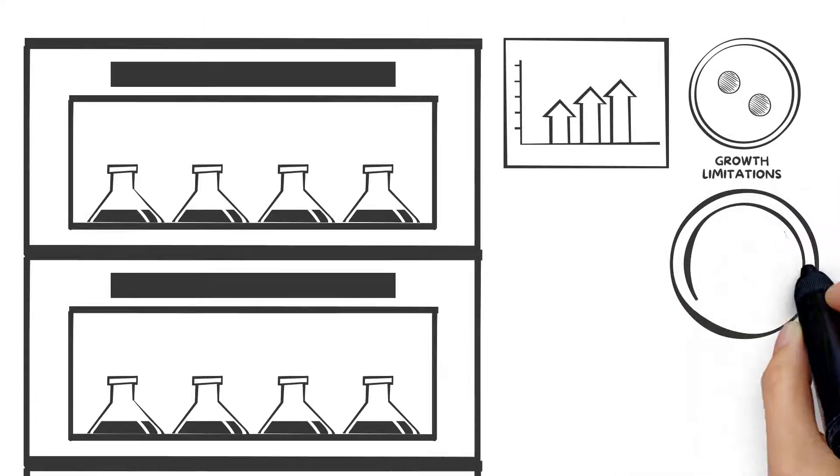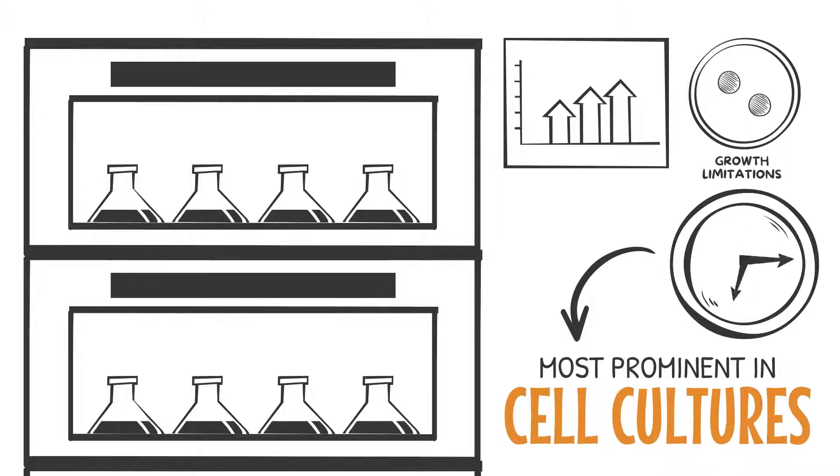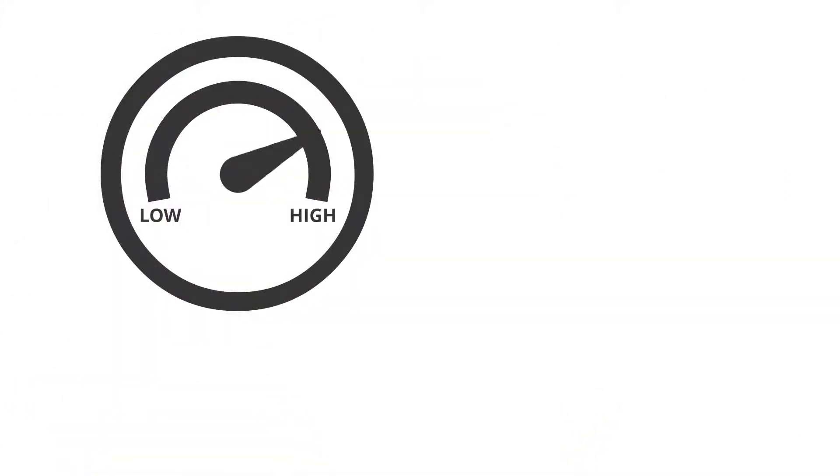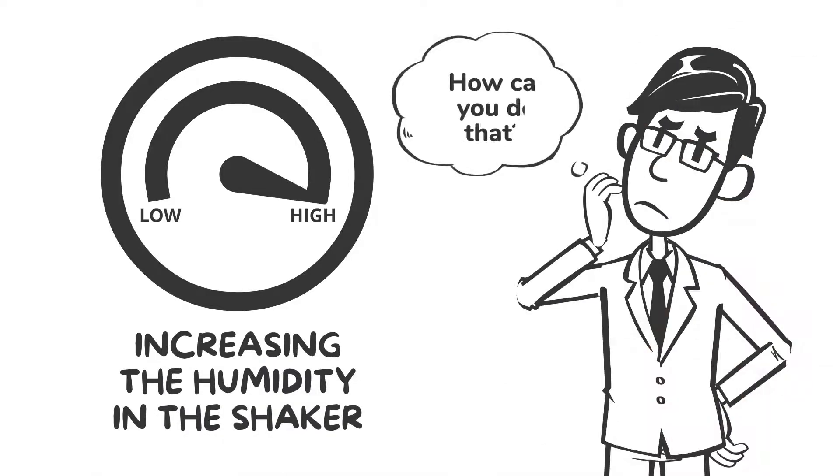This effect increases with the process duration and is therefore most prominent in cell cultures. Fortunately, evaporation can be minimized by increasing the humidity in the shaker, but how can you do that?